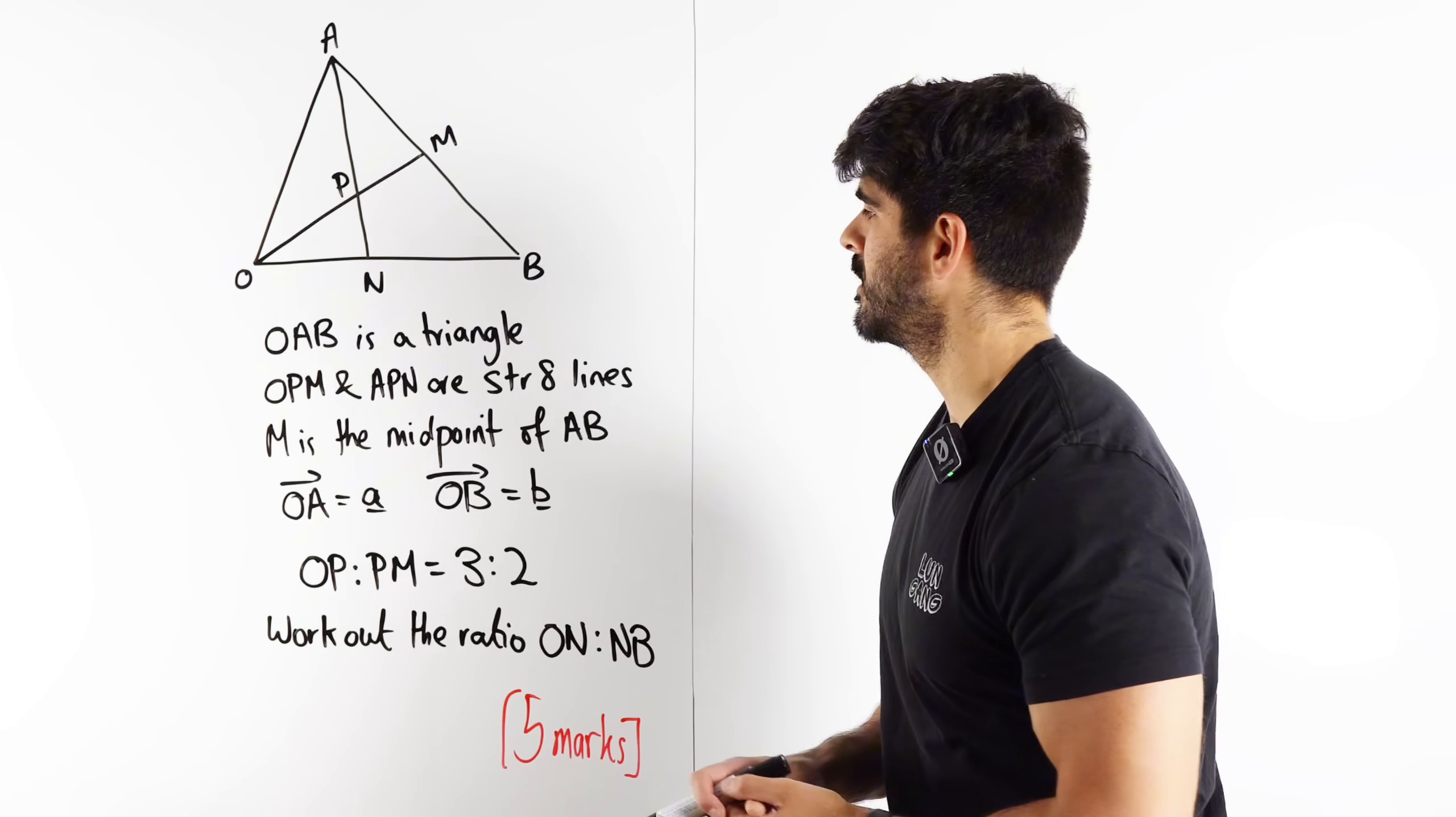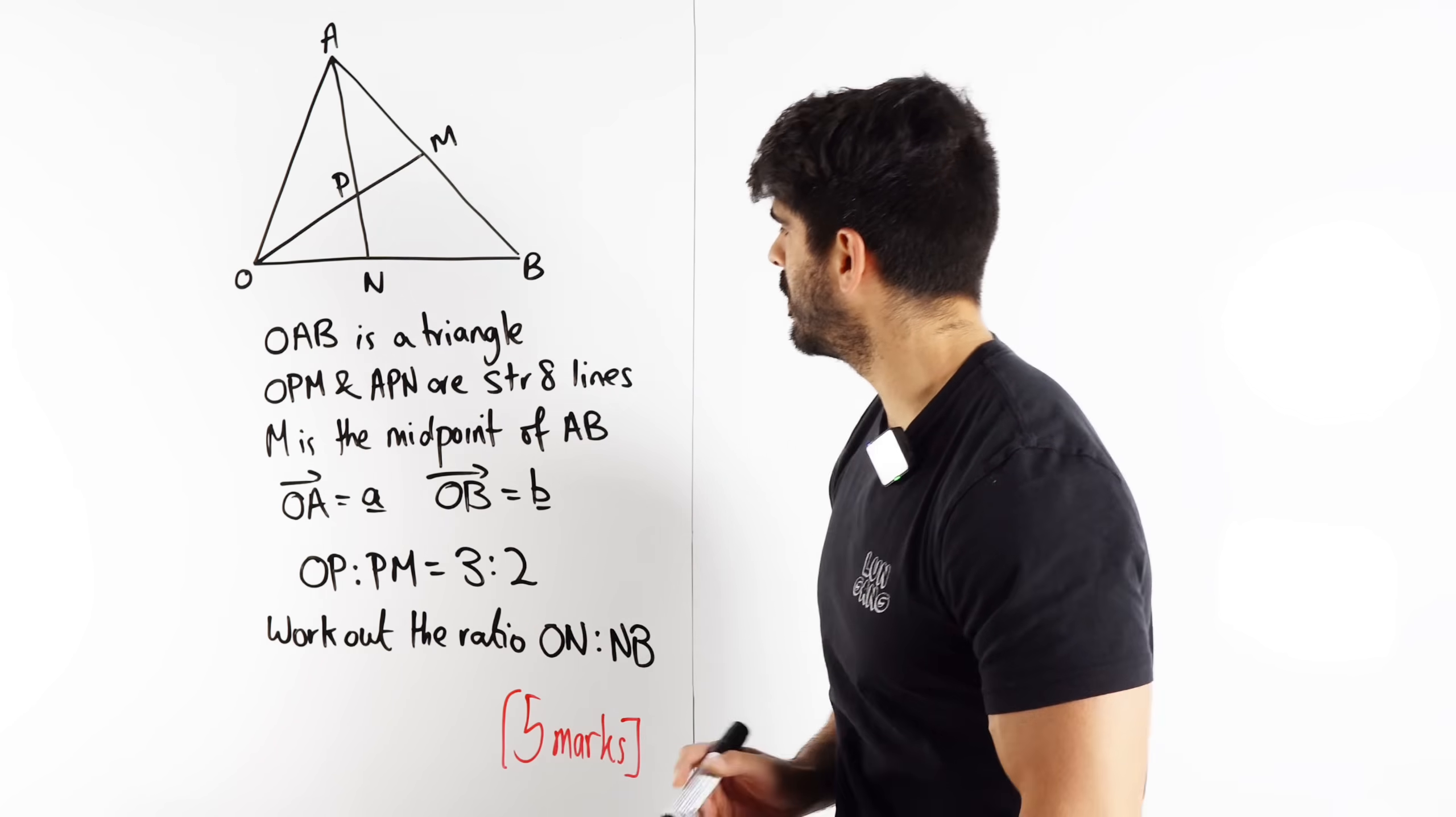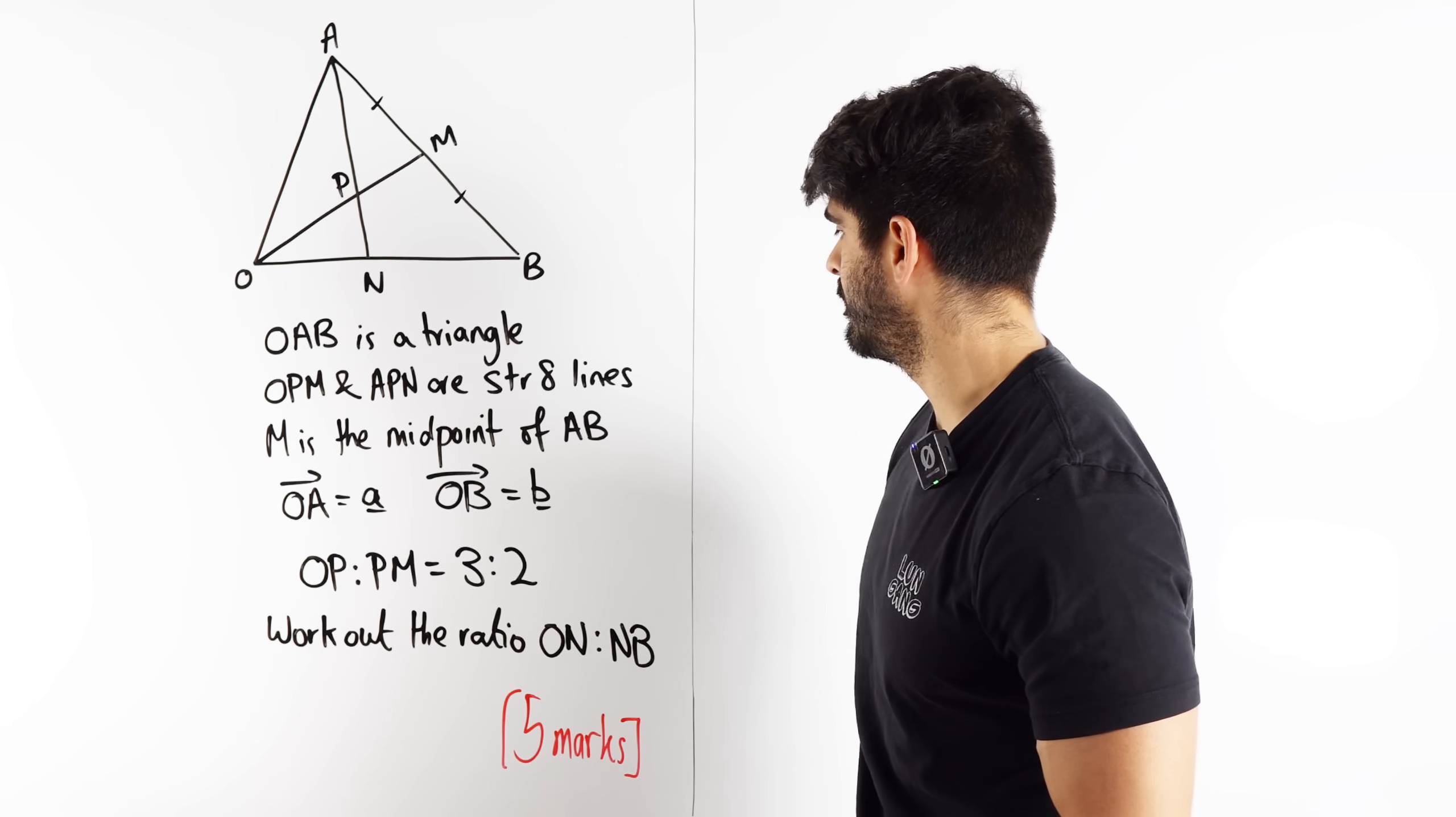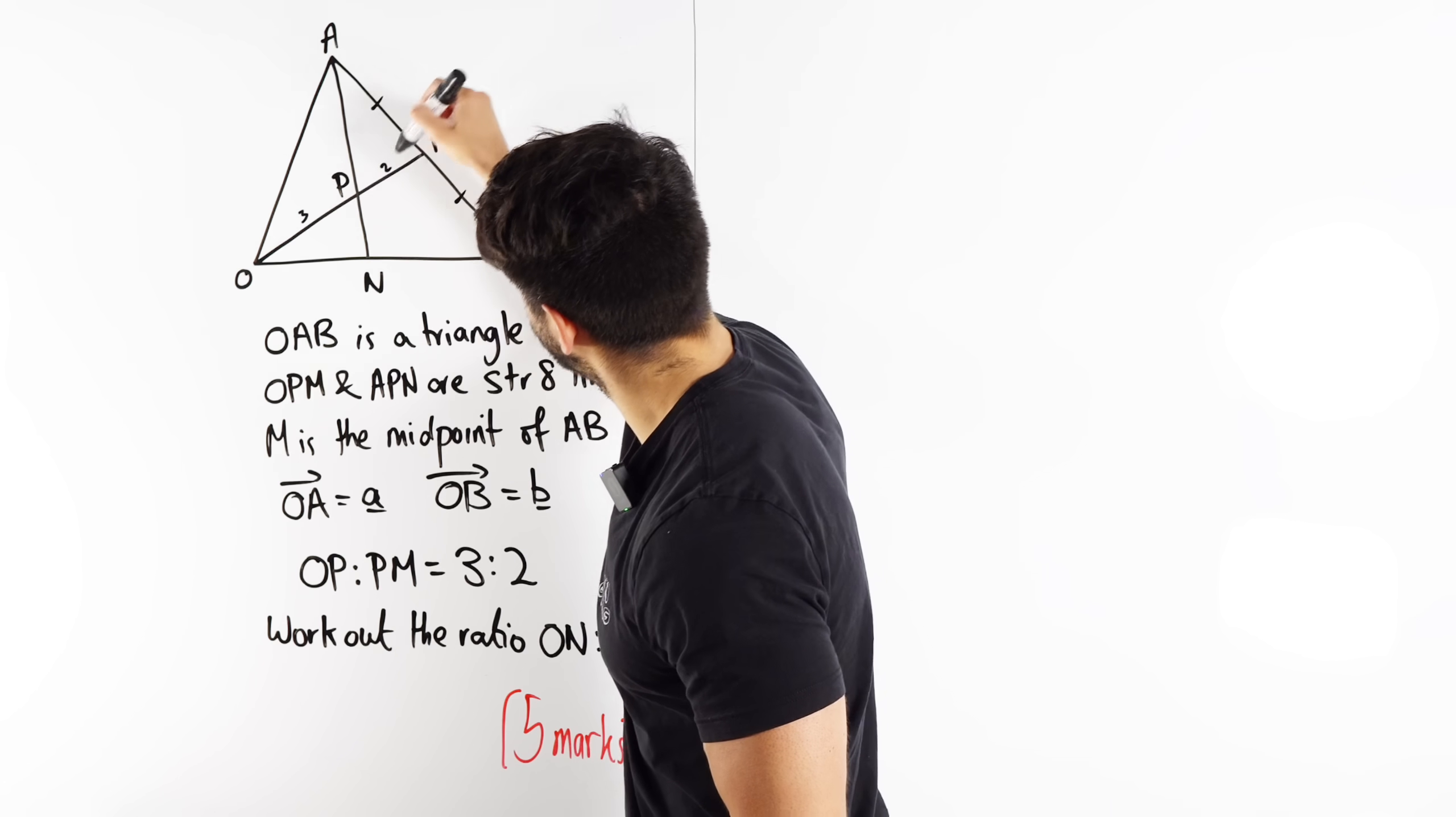Let me show you guys the best way, or in my opinion, the best way to tackle it. So we have OAB is a triangle, we have OPM, APM are straight lines, M is the midpoint of AB, so let's just add these ticks here. We have O to A is the vector A and O to B is the vector B. The ratio of OP:PM is 3 to 2, so this here is 3 to 2.